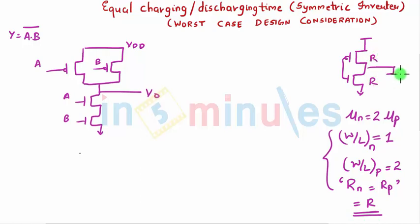I got R, R, which gave me equal charging and discharging. So I want this to be equivalent to this inverter, correct? For the worst case scenario, I am talking about the worst case.